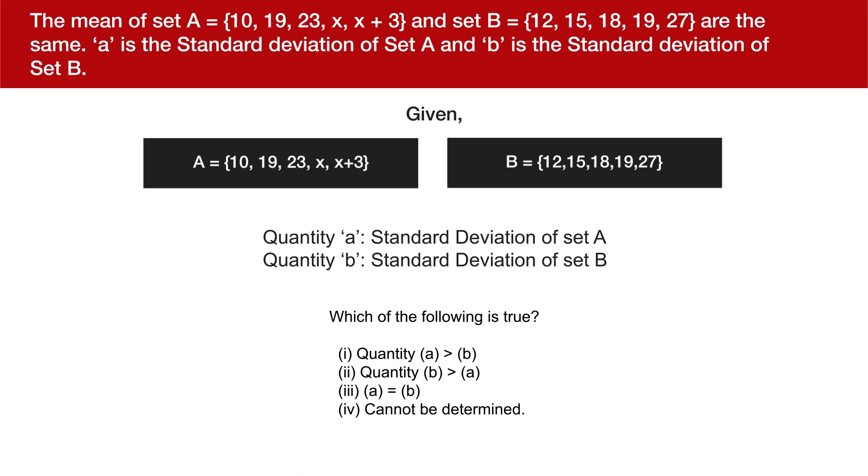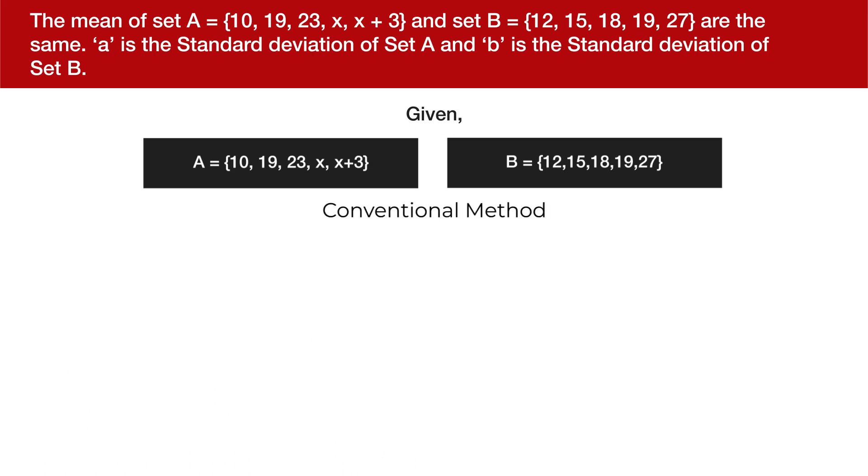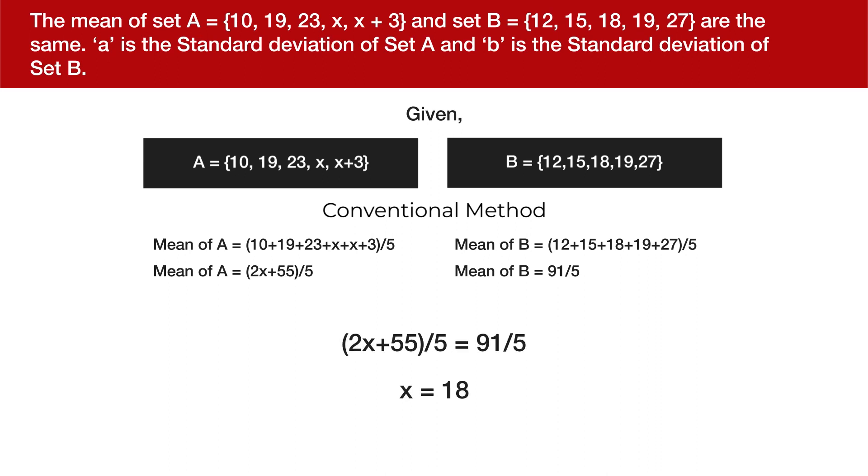There are two ways to solve this particular question. The conventional way is where you calculate the mean of set A which comes down to 2x plus 55 by 5 and the mean of set B which is 91 divided by 5. When you equate them as given in the question and solve the equation, we get the x value to be 18. Now use this value and find out the remaining values in set A.